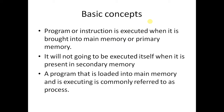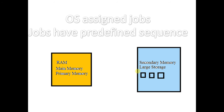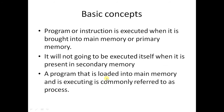A program will not execute itself when it is present in secondary memory — it has to be loaded into RAM or main memory. A program that is loaded into main memory and is executed is commonly referred to as a process. So the execution of a program is basically known as a process in OS terminology.